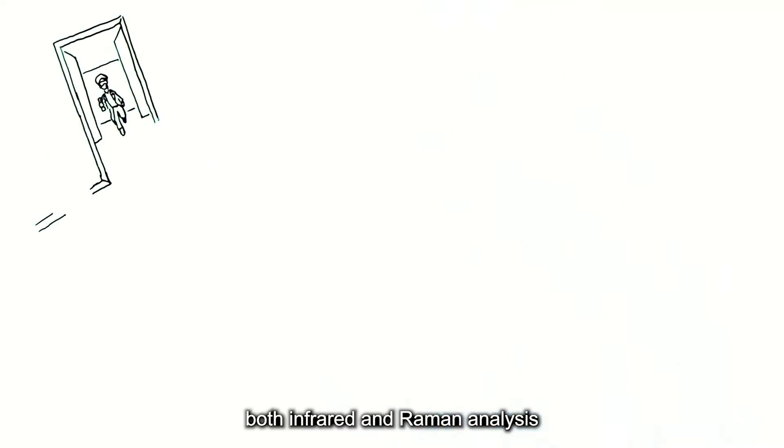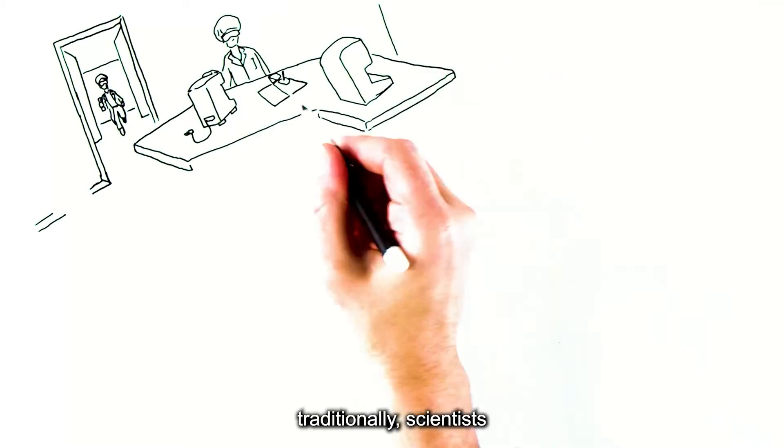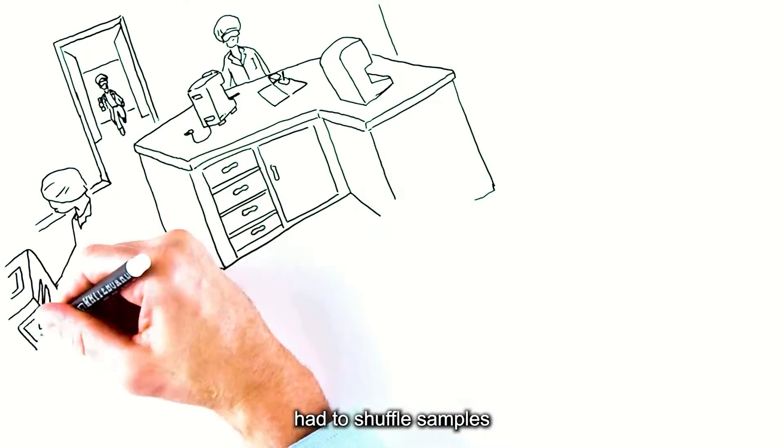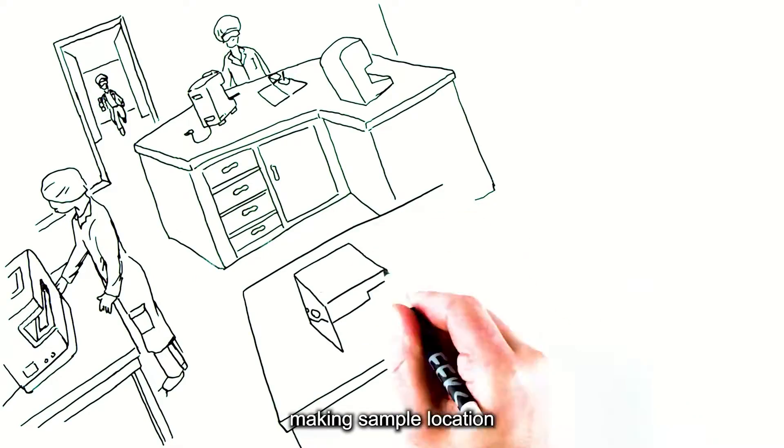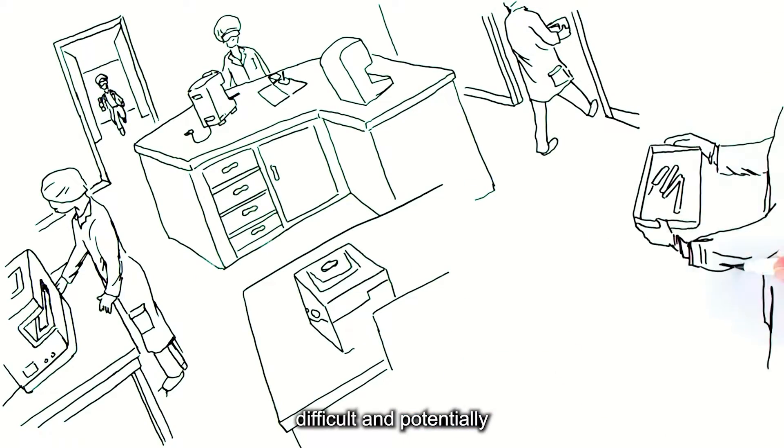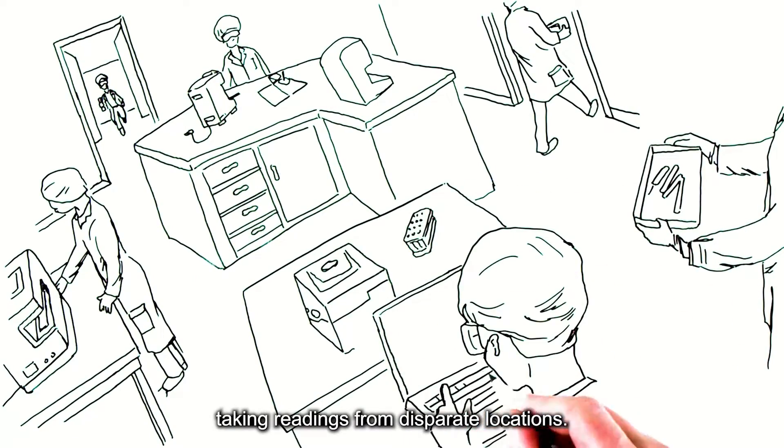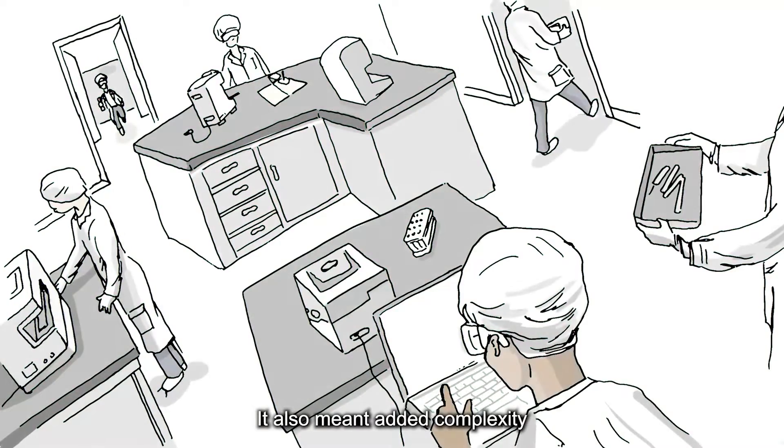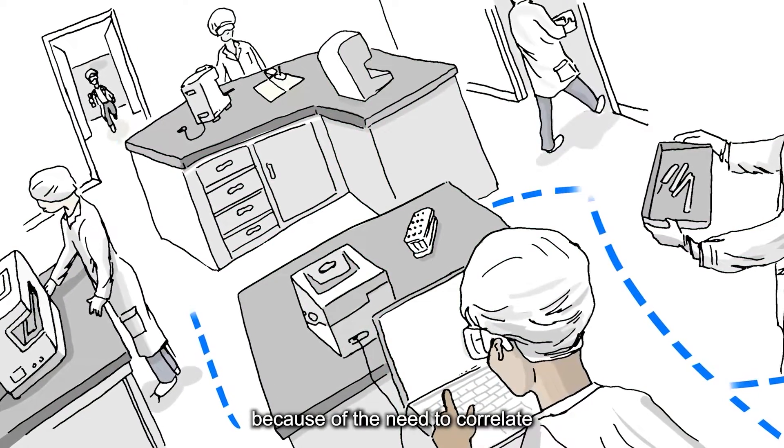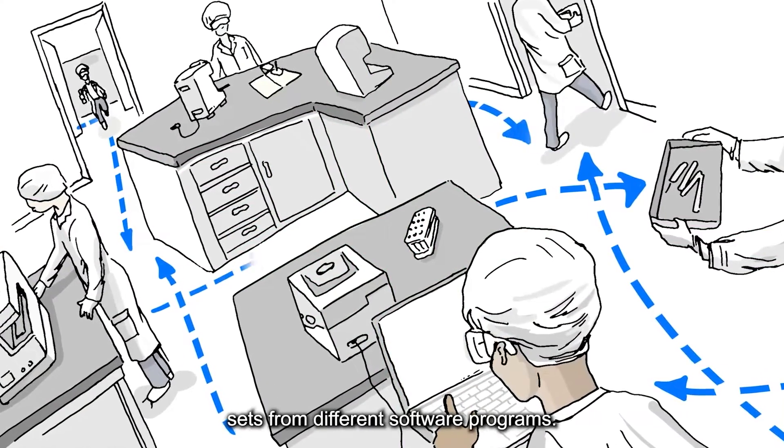In order to perform both infrared and Raman analysis traditionally, scientists had to shuffle samples between separate instruments, making sample location difficult and potentially taking readings from disparate locations. It also meant added complexity because of the need to correlate and interpret datasets from different software programs.